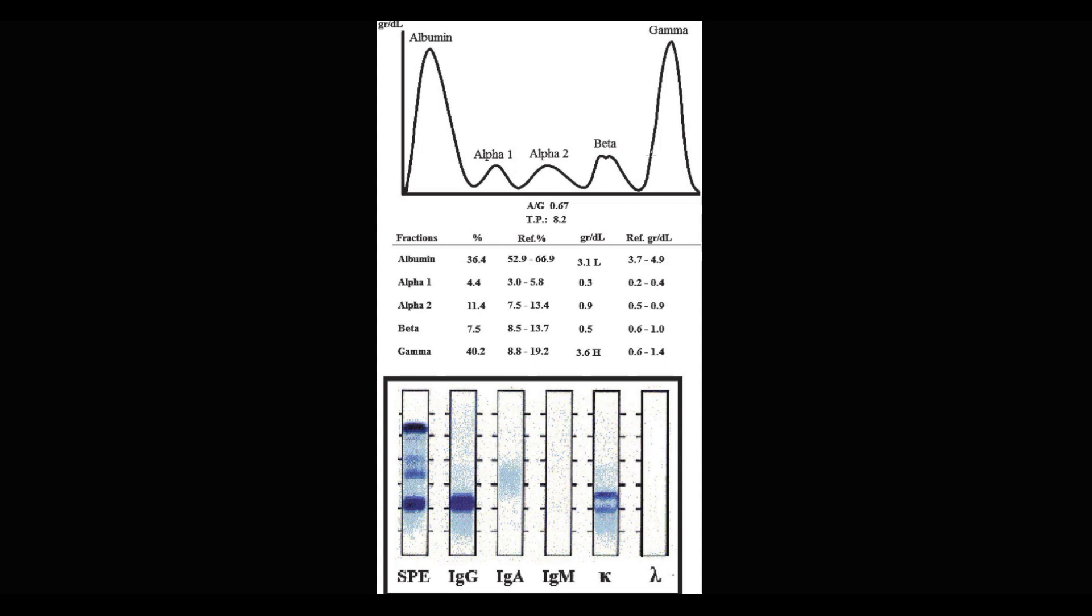Gamma band represents immunoglobulins. And as we see here, gamma fraction is very very large. Now we should determine which immunoglobulin causes such an elevation in gamma fraction.